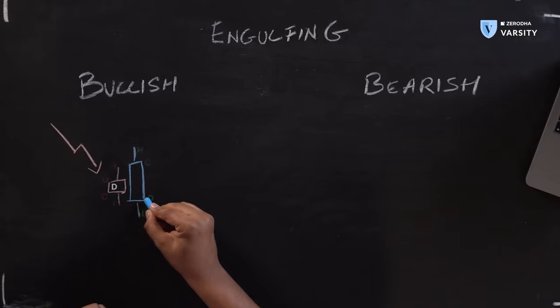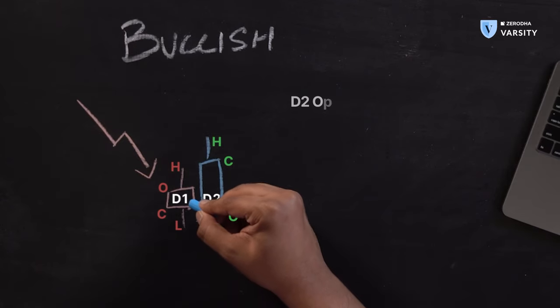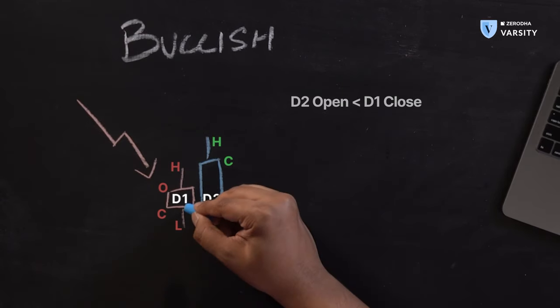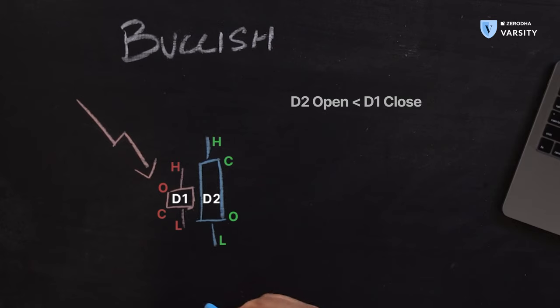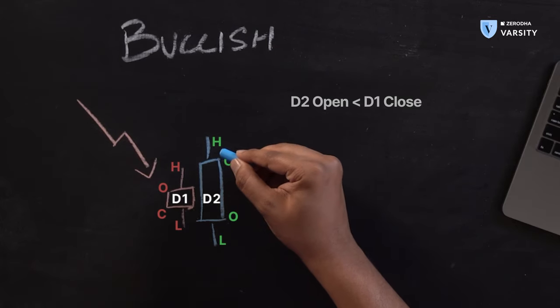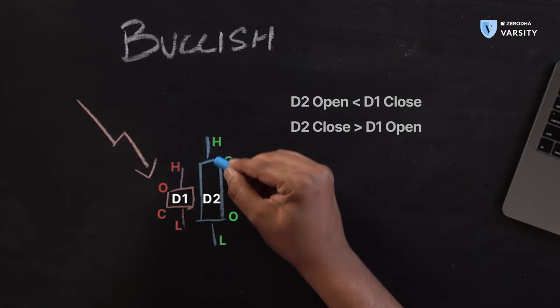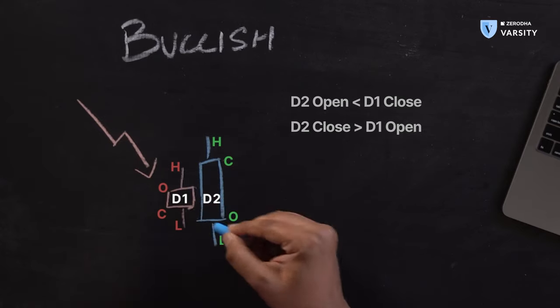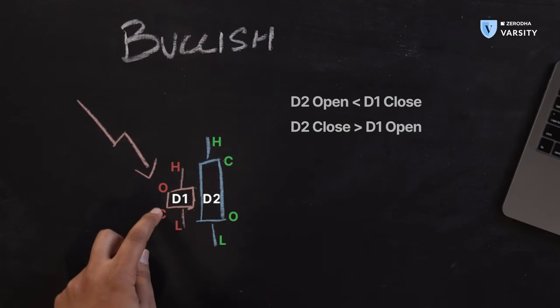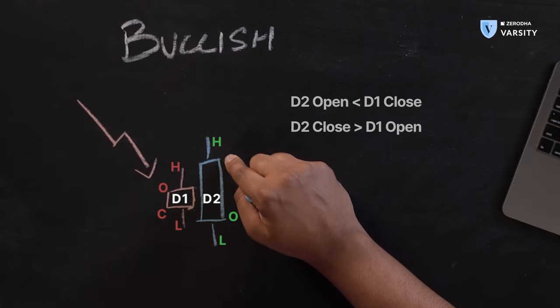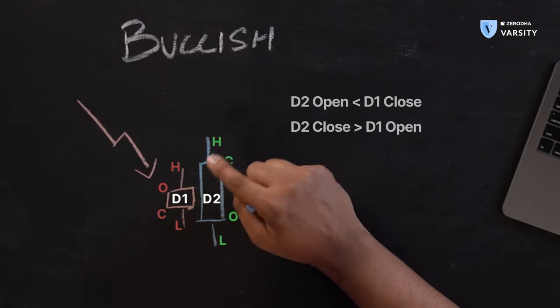Traditionally you have to look at the open and close of day two. The open of candle two on day two is actually lower than the close of day one. We can also see that the close of day two is larger than the open of the previous day. This is what defines an engulfing: the open of day two is lower than the close of day one, and the close of day two is greater than the open of day one.